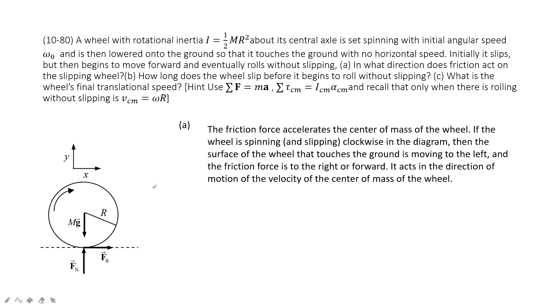In this system, we have a wheel undergoing rotational motion. The rotational momentum inertia is given, and also the initial angular speed omega naught. It touches the ground and initially slips, but then begins to move forward and eventually rolls without slipping.